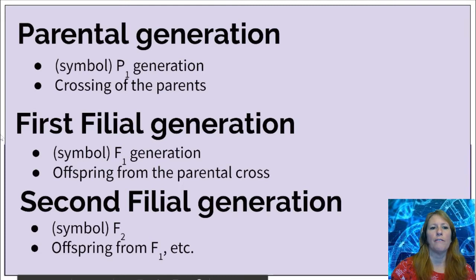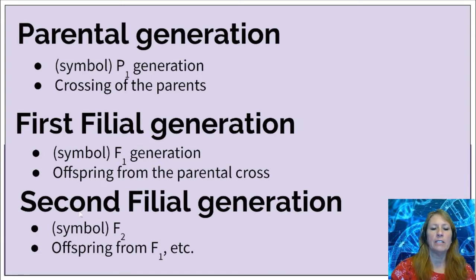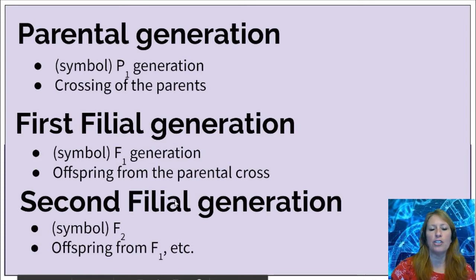Now the terms and symbols used in genetic problems: the parental generation is represented by a capital P with a subscript 1. The term 'filial' uses a capital F — F1 is the first filial generation, the offspring from the parental generation. You can continue with F2, F3, F4, and so on for each successive generation that is crossed.